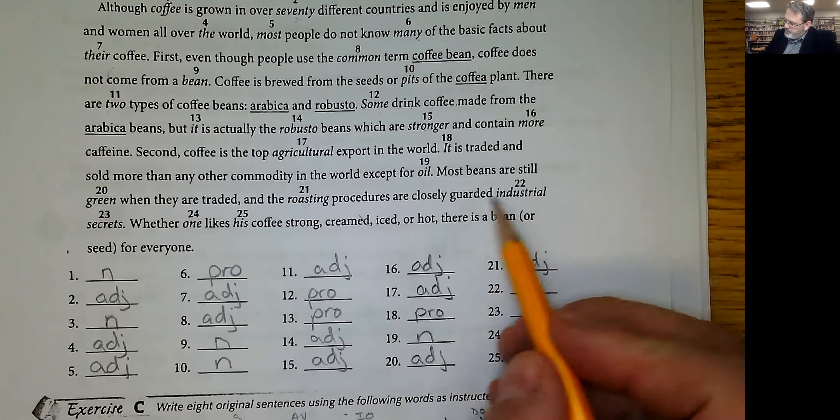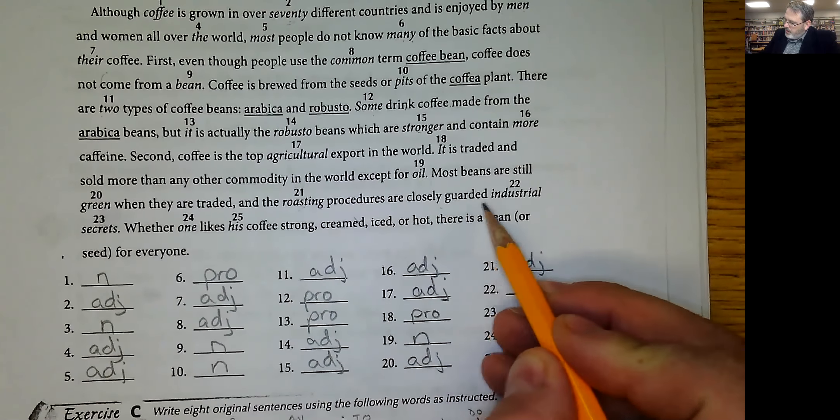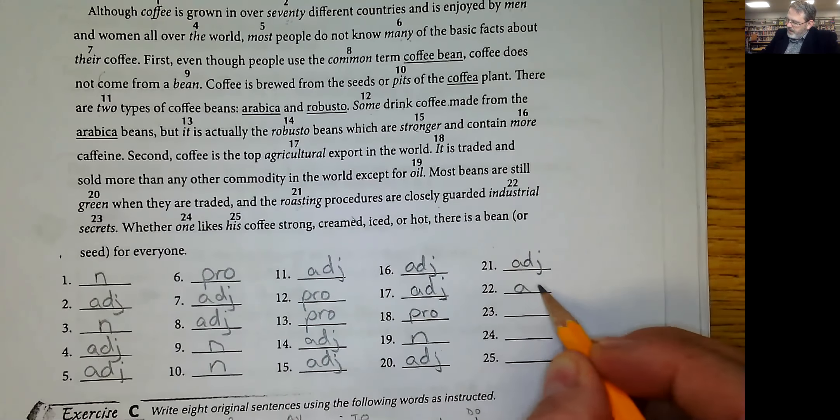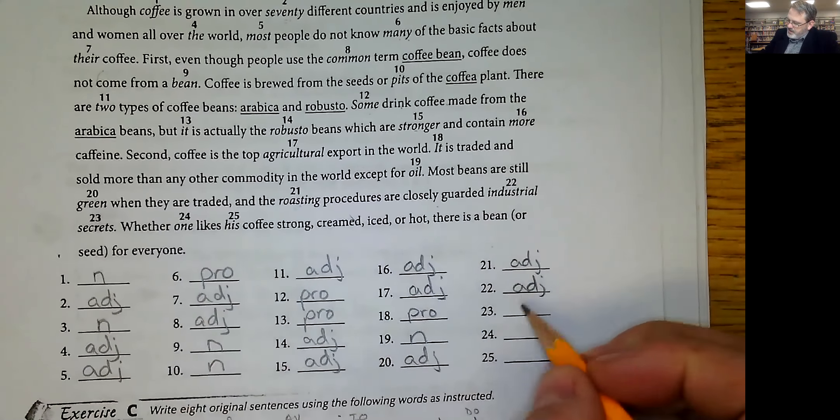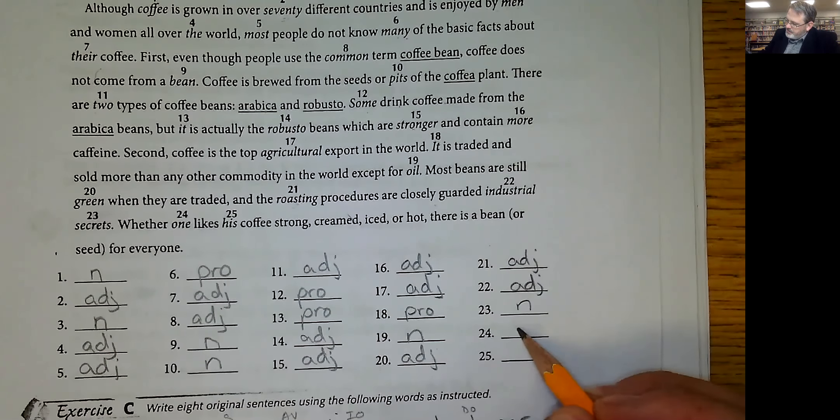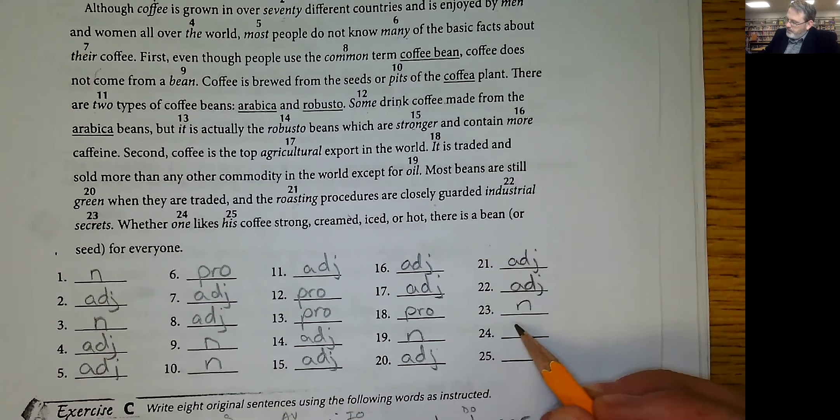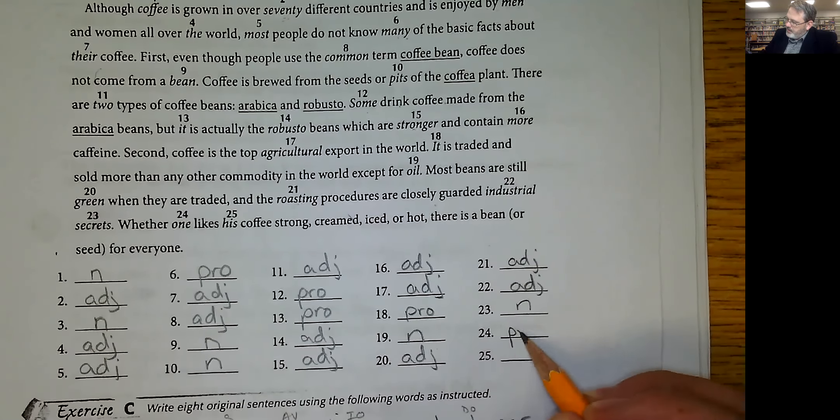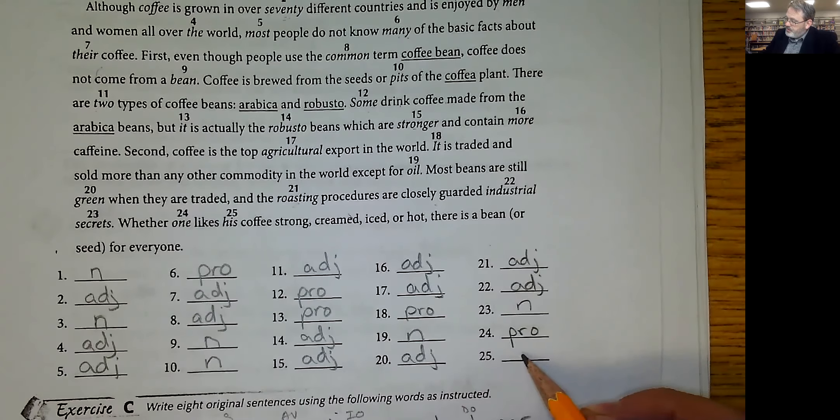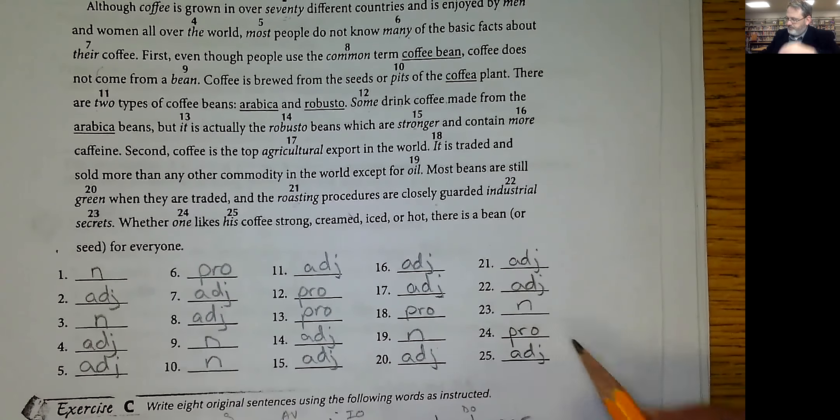Number 22, they're guard, closely guarded industrial secrets. What kind of secrets? Industrial, that's an adjective, but secrets is a noun. One likes, one stands in for a person whoever that is, so that's a pronoun. Likes his coffee, whose coffee, is an adjective.